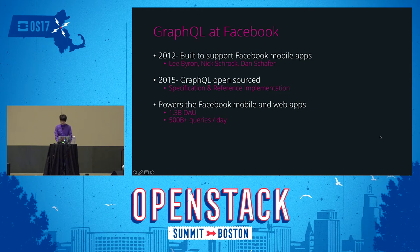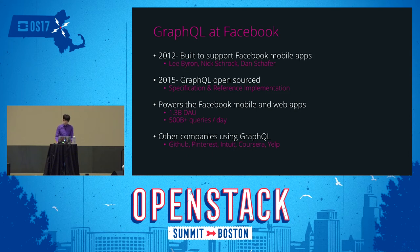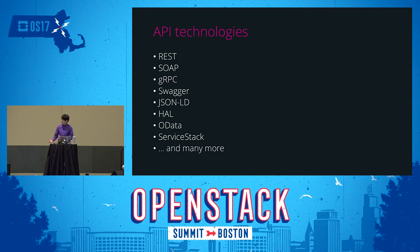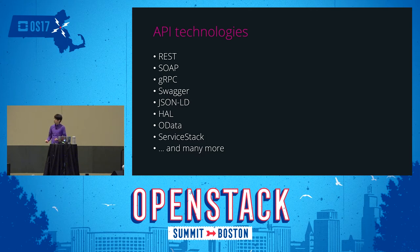GraphQL is seeing rapid adoption at other companies including GitHub, Pinterest, Intuit, Coursera, and Yelp, among others. There are many architectures and patterns that facilitate client-server communication, and GraphQL is not the only one. In the interest of time I'll focus on comparing it to REST, because REST is the architectural style of the web, and by comparing it to REST you'll transitively understand how GraphQL compares to other API technologies.